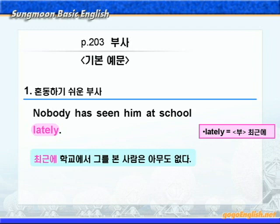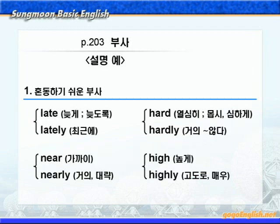설명을 보시죠. late, lately, high, highly, near, nearly가 있습니다. highly가 되면 부정의 뜻으로 '거의 뭐뭐 않다' 이런 뜻입니다. near는 '가까이' 이런 뜻이지만 nearly가 되면 '거의, 대략' 이런 뜻으로 almost와 뜻이 비슷하죠. high는 물리적인 의미로 '높게' 이런 의미고, highly는 정도상으로 높게, 즉 '고도로, 매우' 이런 뜻이 됩니다. 형태는 비슷한데 뜻이 많이 다르죠.